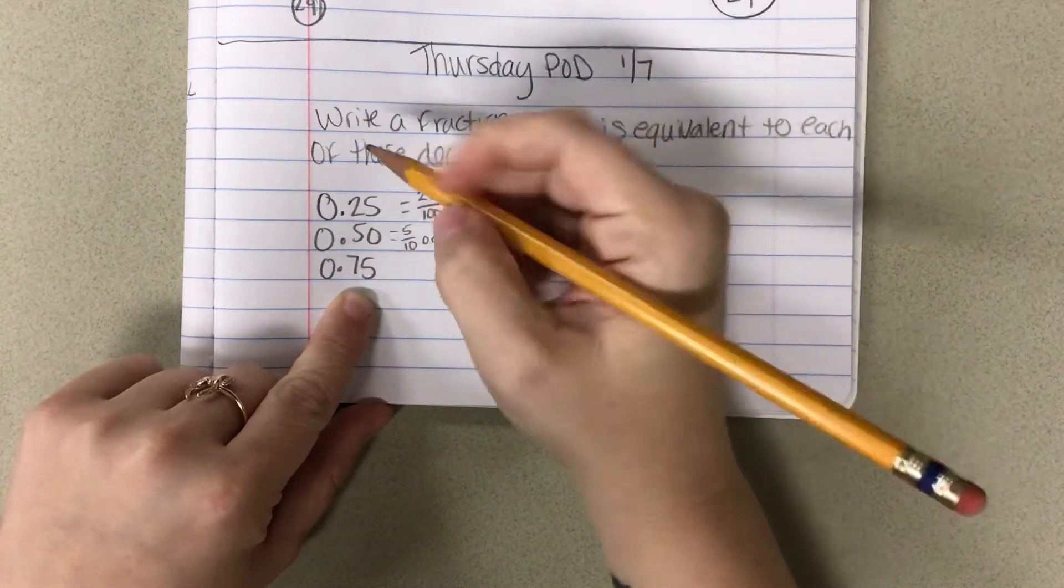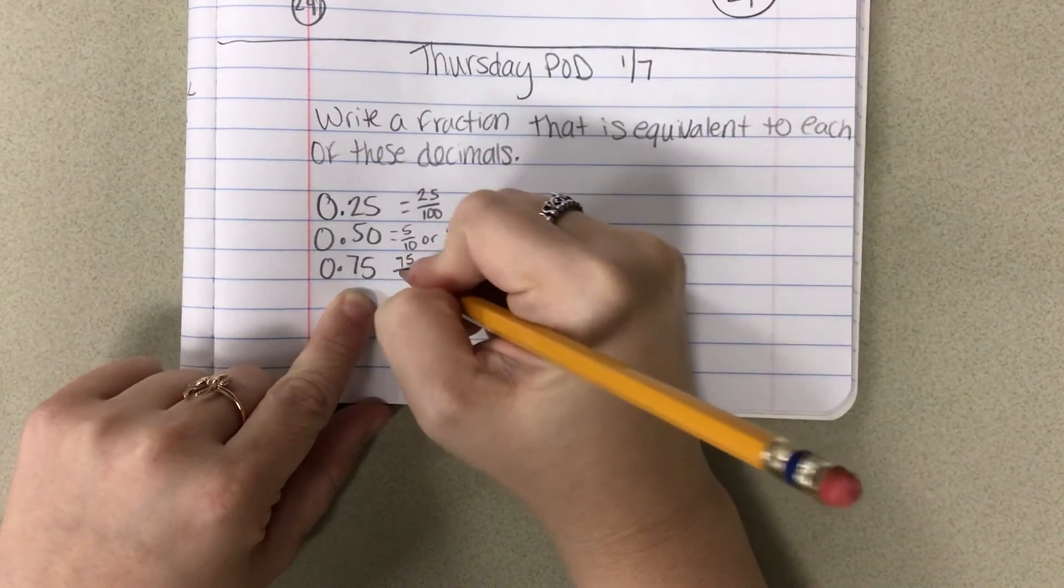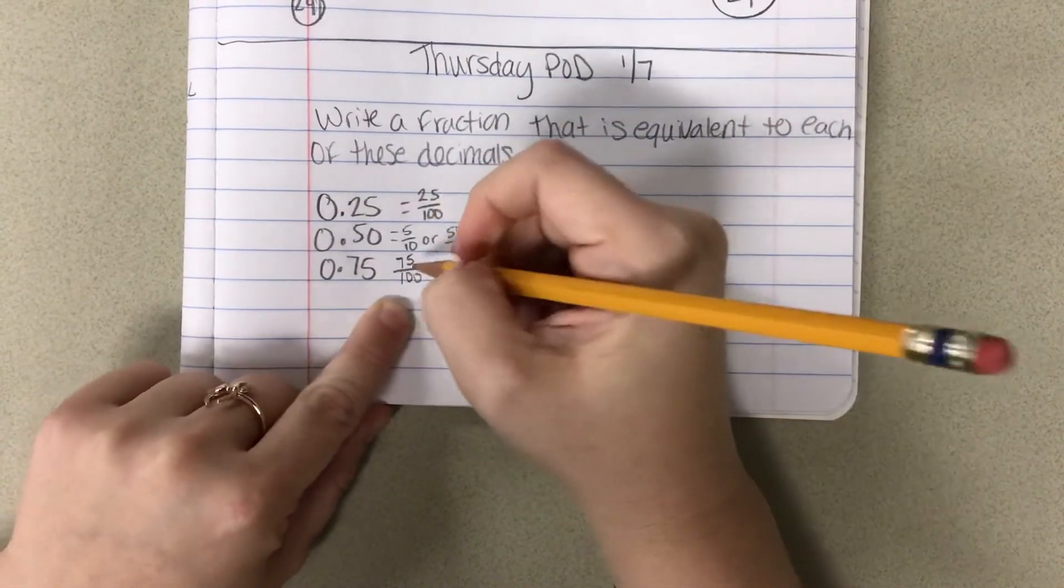And then 0 and 75 hundredths, so 75 hundredths. So the same way you read it is the same way you write it.